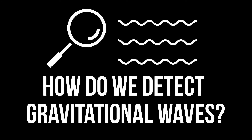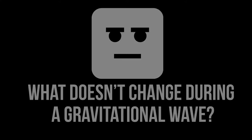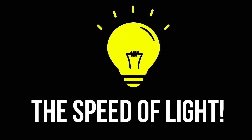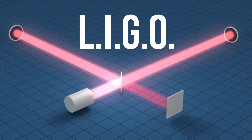How do scientists detect gravitational waves? First, we need to ask: what doesn't change during a gravitational wave? The answer is the speed of light. That is what doesn't change during a gravitational wave. This is where the LIGO comes in.